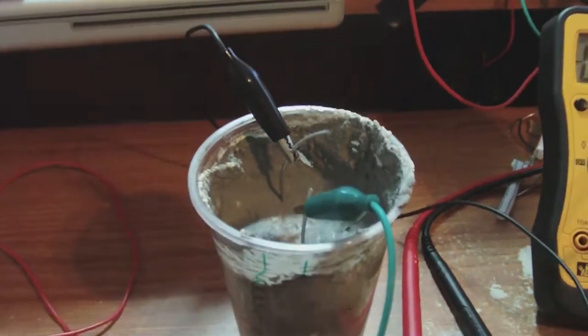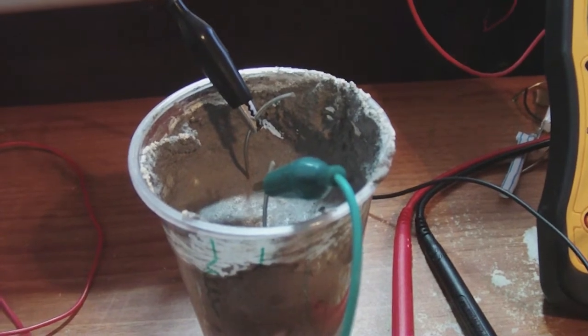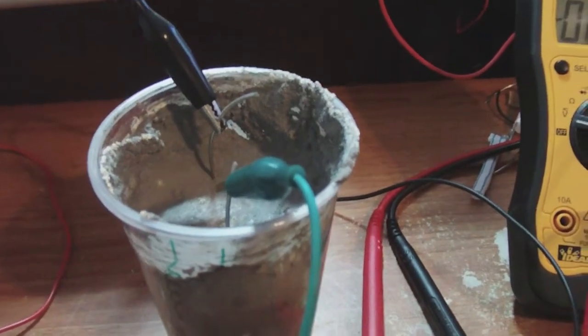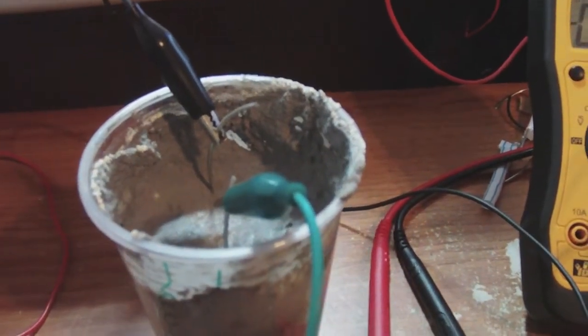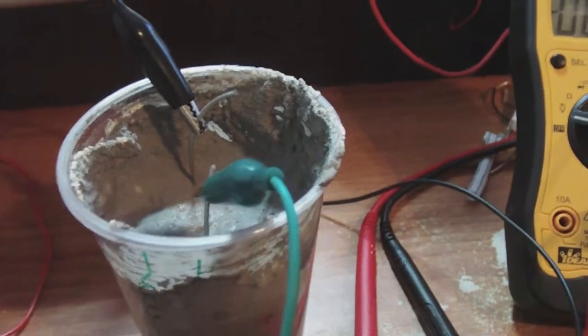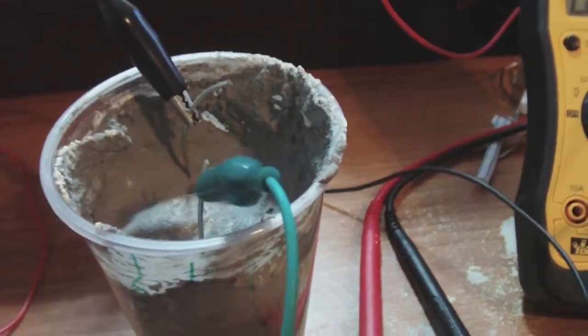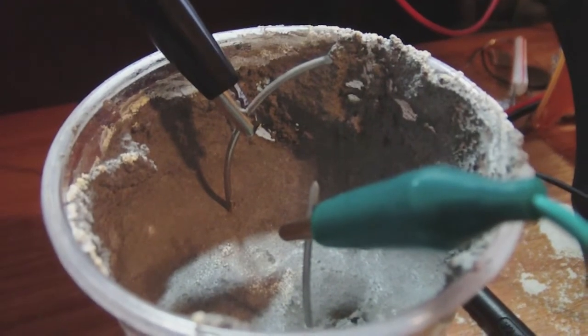But I want to do something a little bit different. Instead of using copper and magnesium, I instead use aluminum and aluminum. Basically what that means is both plates, which are aluminum wire, are both aluminum.